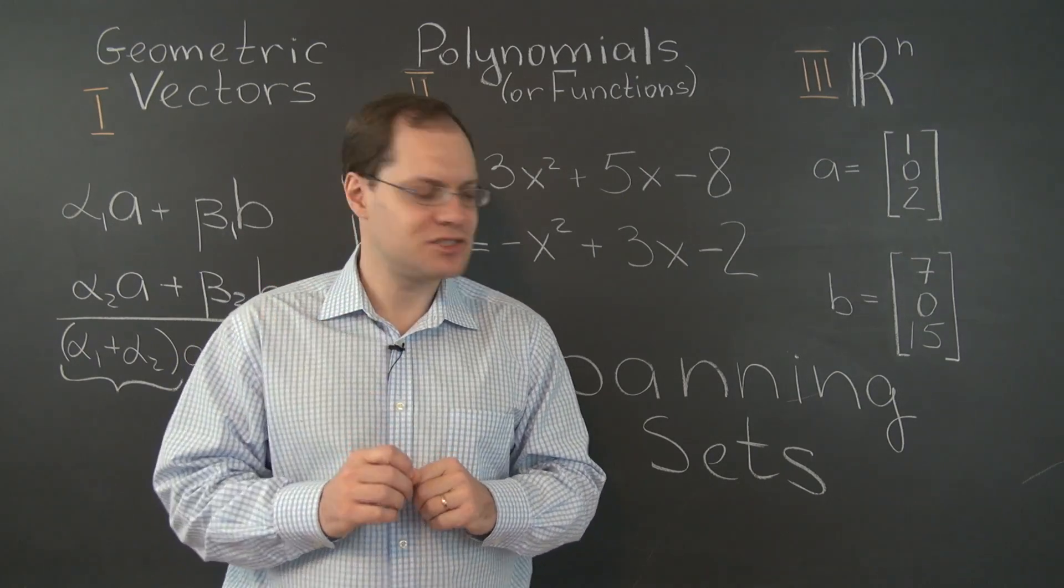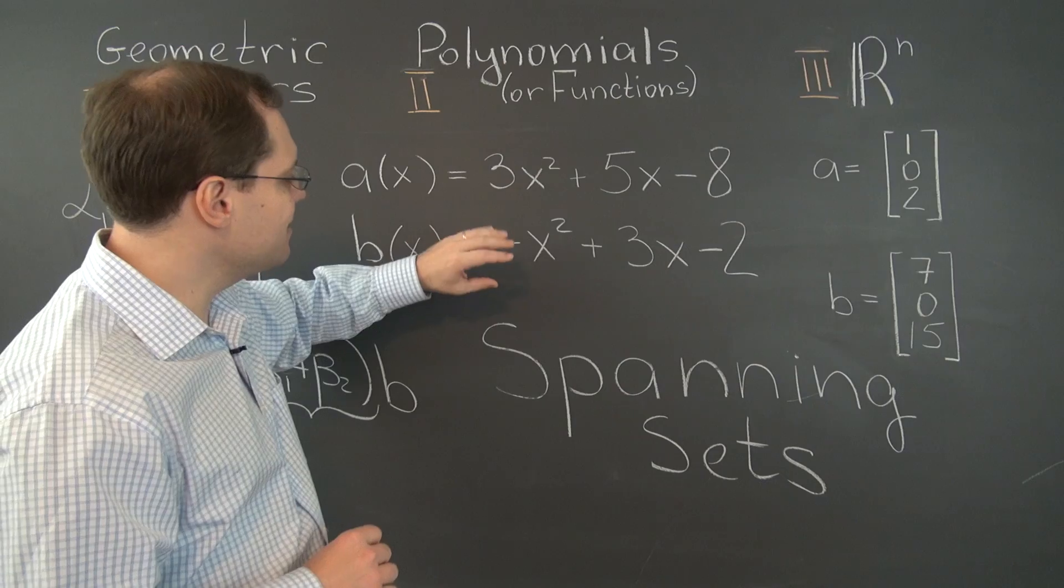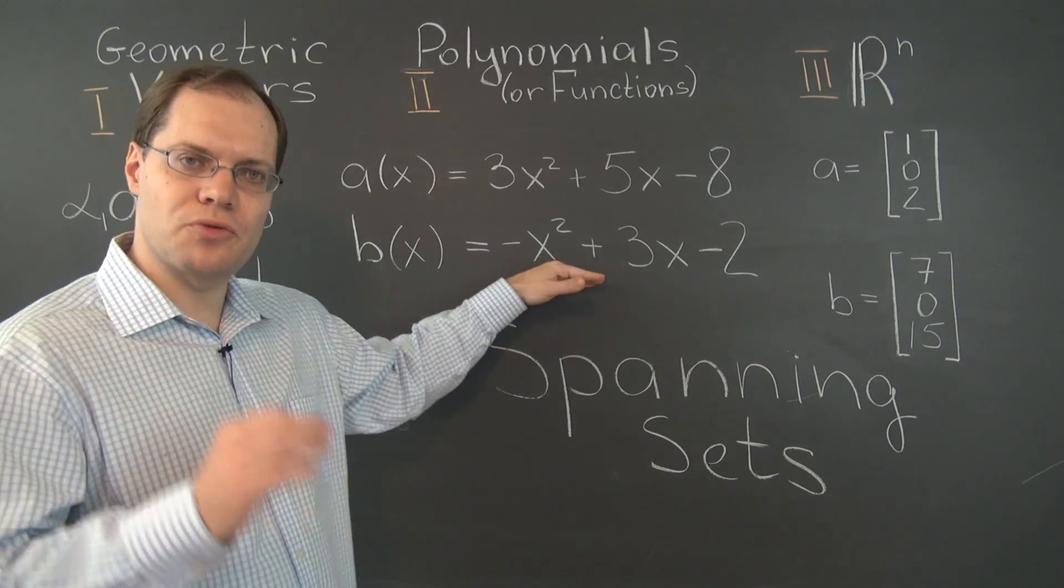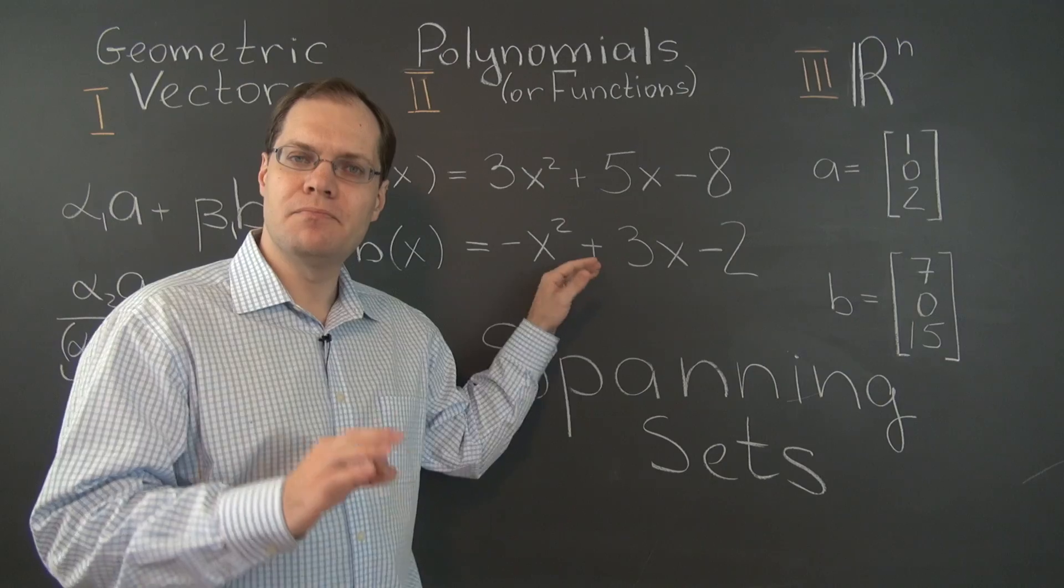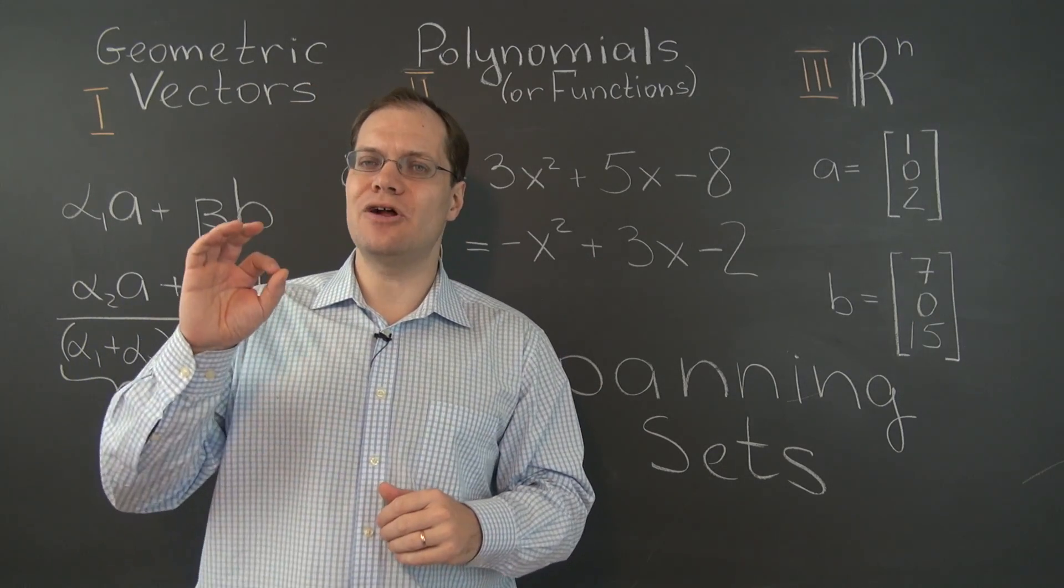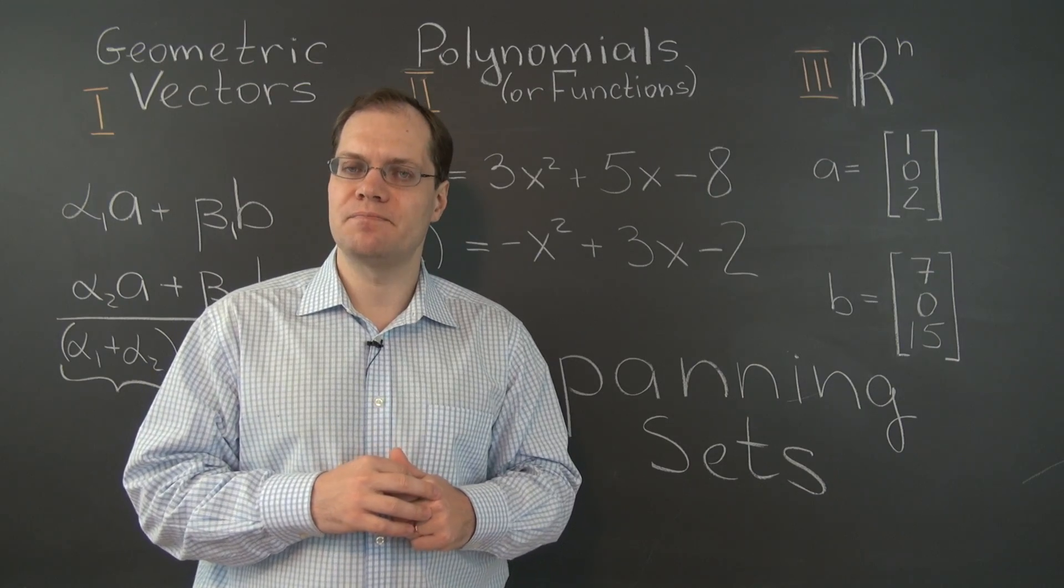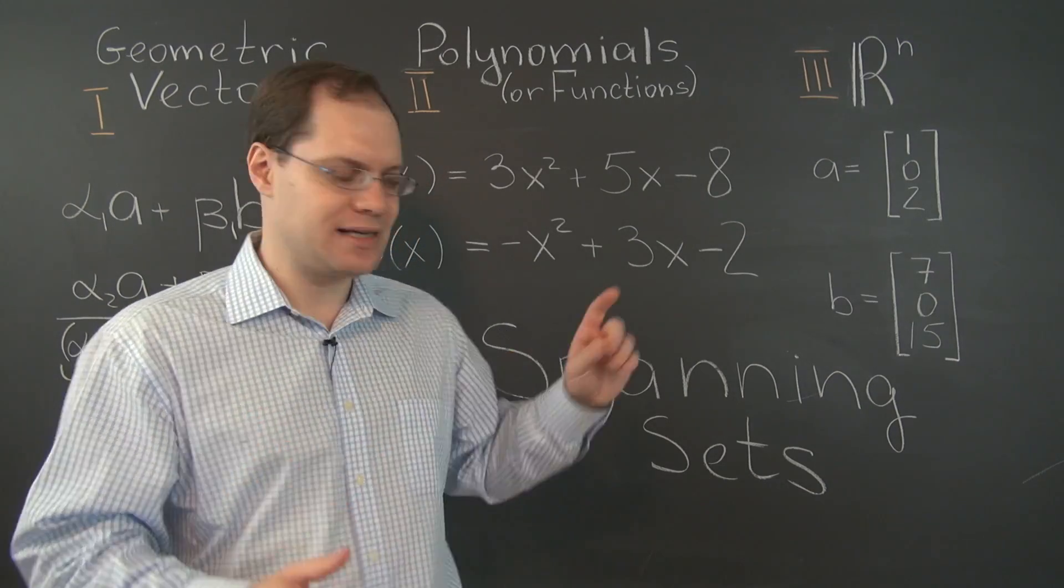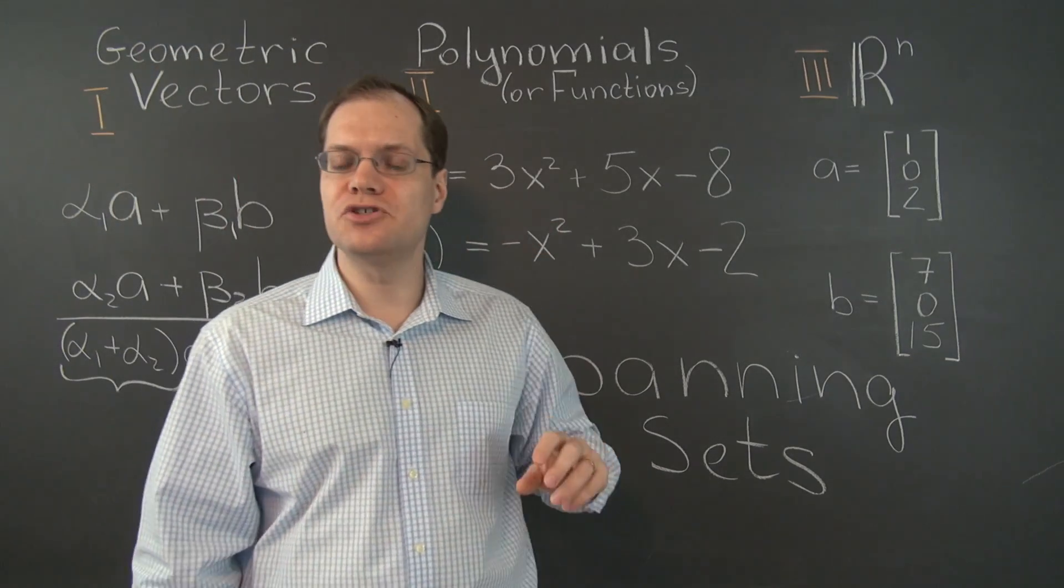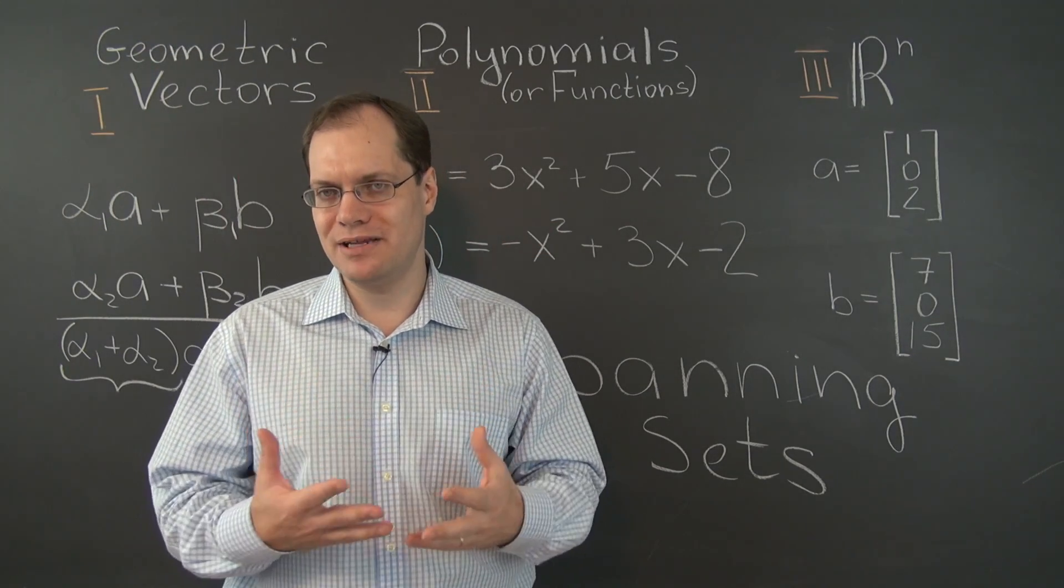So, do these two polynomials form a spanning set for the subspace of polynomials whose coefficients add up to zero? Just to clarify that question a little bit, that yes, any linear combination of these two polynomials have that property. But does that mean that you can get all possible polynomials that have this property? Or could there be other polynomials that have this property that these polynomials could not generate by linear combination?